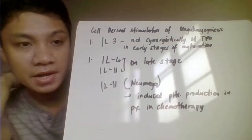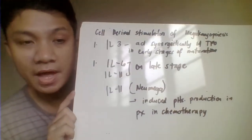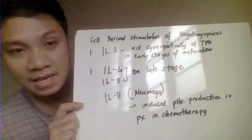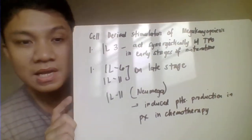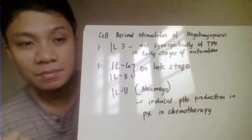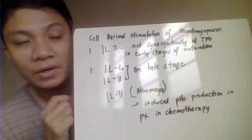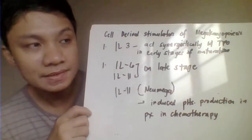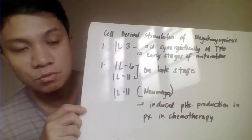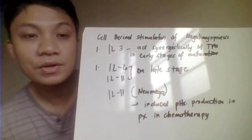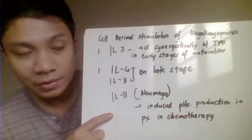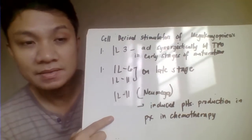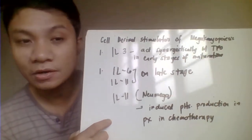We also have other growth factors which help in the differentiation of your megakaryocytes. Interleukin 3 acts synergistically with TPO in terms of the differentiation and maturation of the megakaryocyte, acting most likely on the earlier stages of maturation. Interleukin 6 and 11, on the other hand, act on the latter stages of maturation. Interleukin 11, also called Neumega, is very helpful to increase platelet production for patients undergoing chemotherapy.